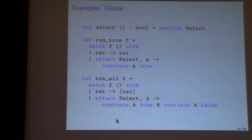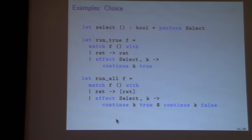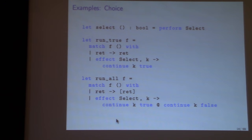An even more interesting example is choice. There's a single operation that returns a boolean — true or false. Run_true always continues with true whenever select occurs. But run_all is more interesting: in the return case you get a singleton list, and when select is reached you first continue with true, then append that to the result of continuing with false. The result is a list of all possible results for all possible choices of select.